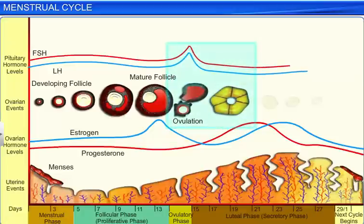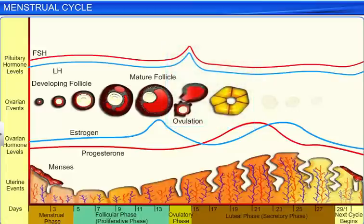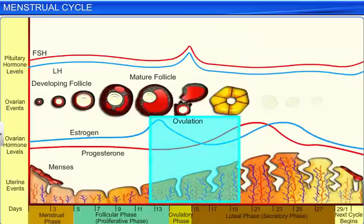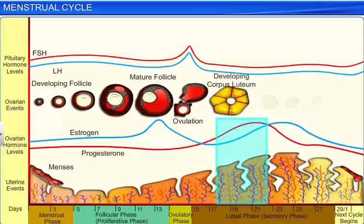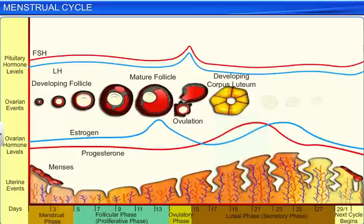This LH surge causes ovulation by rupturing the Graafian follicle and turning the follicle's remnants into the corpus luteum. The estrogen level in the body too reaches its peak, and we see a gradual thickening of the endometrium. However, once the corpus luteum begins secreting large amounts of progesterone and an LH and FSH inhibiting hormone, the levels of both these hormones drop, which in turn also lowers the levels of estrogen in the body. However, the endometrium continues to thicken because of an increase in the level of progesterone.